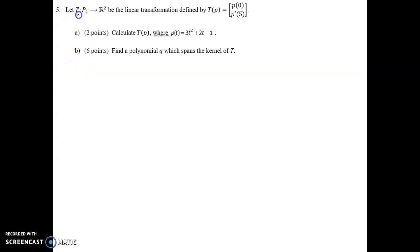So T is a transformation from the collection of polynomials degree two or lower to R2. What this transformation does is it takes a polynomial P and turns it into this vector in R2 according to this rule here. The first entry will be P of 0, and the second entry will be the derivative at 5.